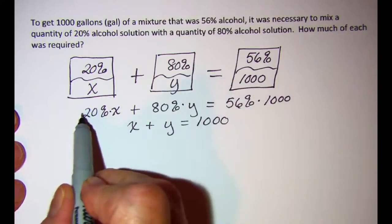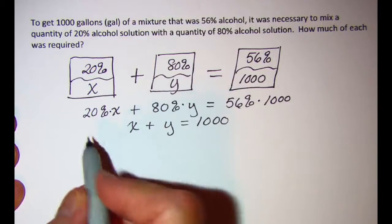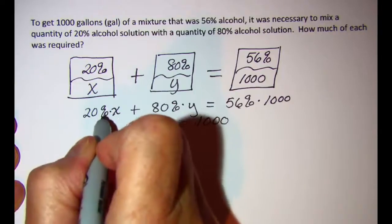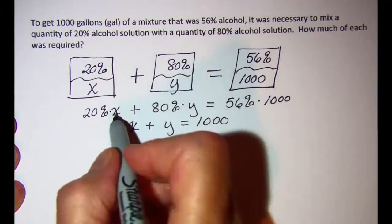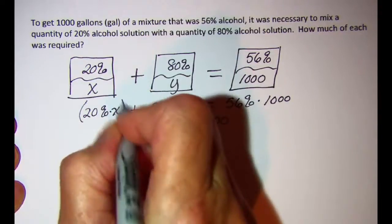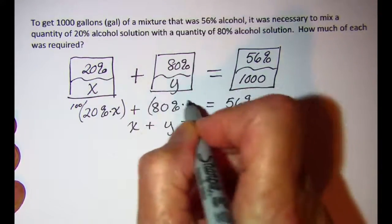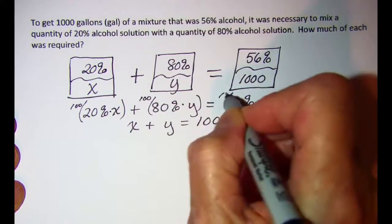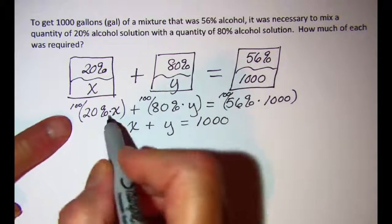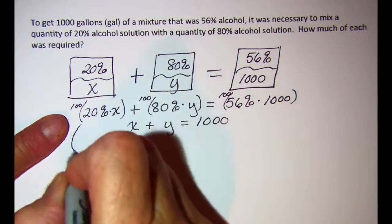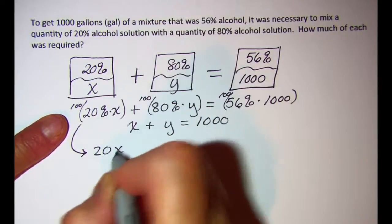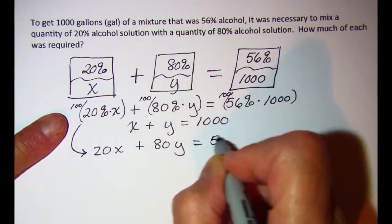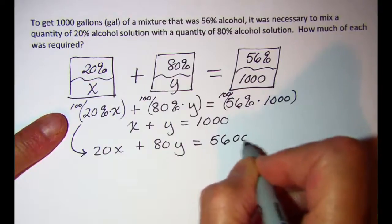I'm going to simplify this equation, this top one. I'm going to multiply through by a hundred to remove these percent signs. So every term I'm going to multiply by a hundred, and that'll leave me with 20x plus 80y equals 56 times a thousand, so 56,000.